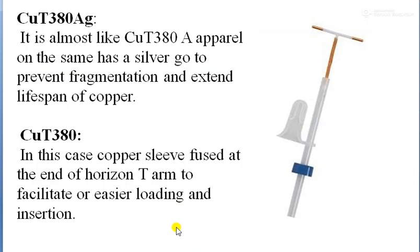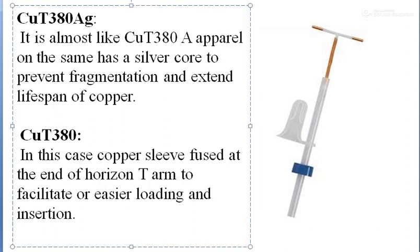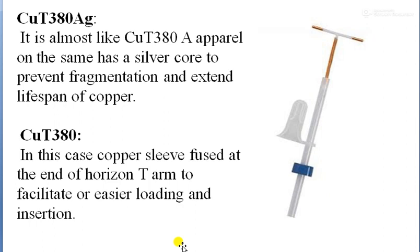Another second-generation type is CuT 380Ag, where Ag represents silver. It is similar to the CuT 380A but has a silver core to prevent fragmentation and extend the lifespan of the copper wire. This is the main difference between CuT 380A and CuT 380Ag.